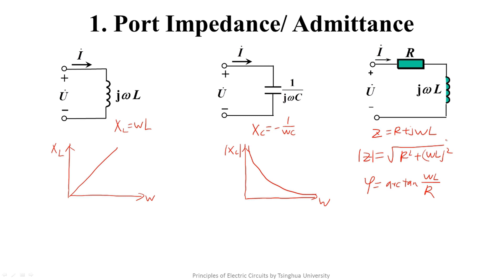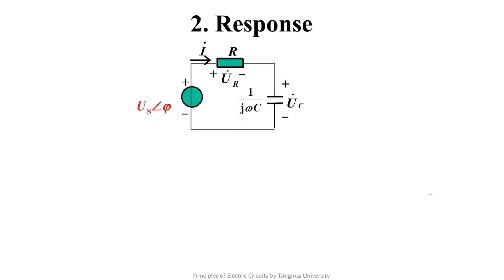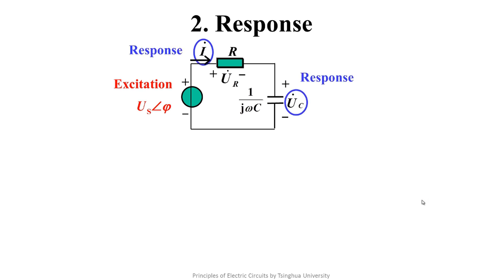Next, we discuss the frequency characteristic of the response. This is an RC circuit with a voltage source, resistor, and capacitor connected in series. We define the voltage source as the excitation, and all branch variables in the circuit can be responses. We are interested in the current and voltage of the capacitor.